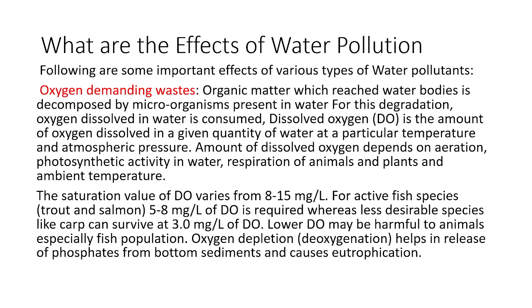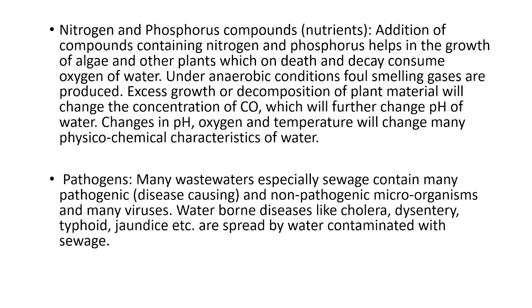All these factors are responsible for maintaining dissolved oxygen in the ecosystem. The saturation value of dissolved oxygen varies from 8 to 15 mg/L. For active fish like red trout and salmon it may range from 5 to 8 mg/L. Lower dissolved oxygen is harmful to animals, especially fish populations. Oxygen depletion, or deoxygenation, also helps release phosphates from bottom sediments and causes eutrophication.